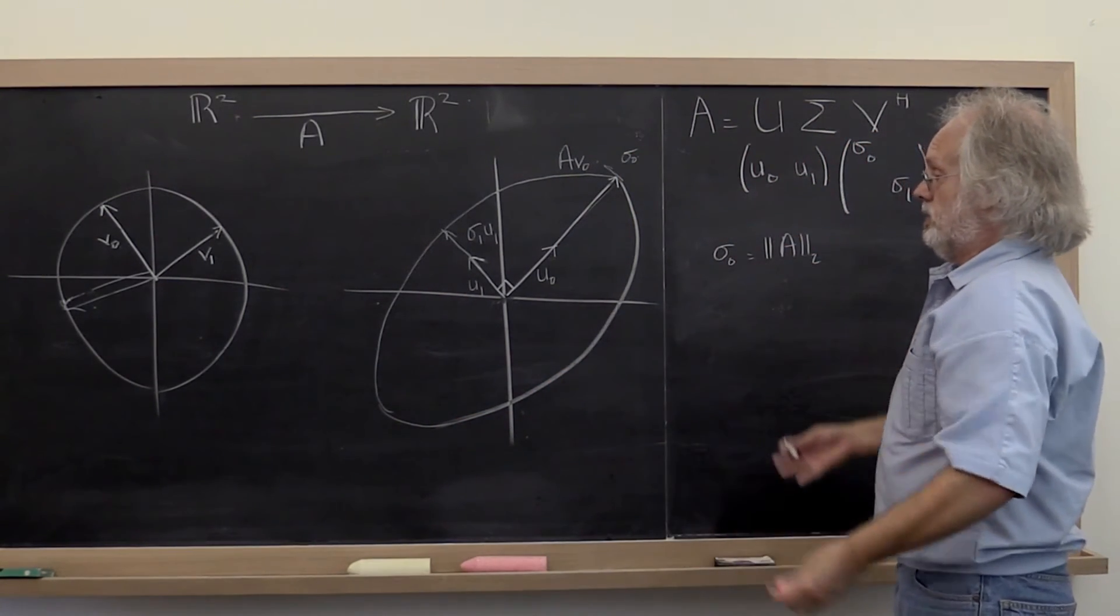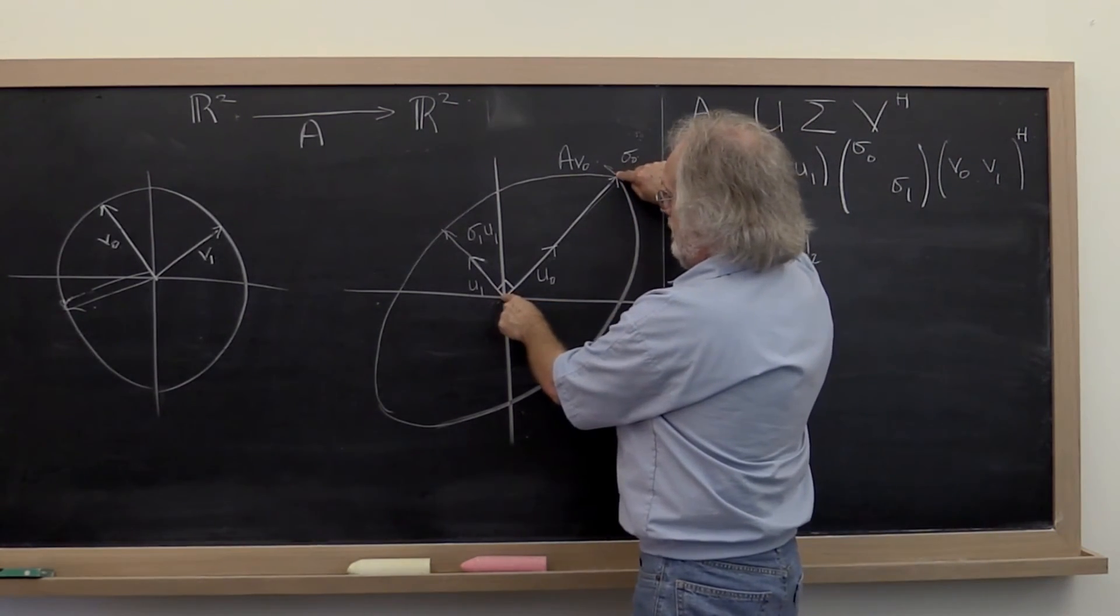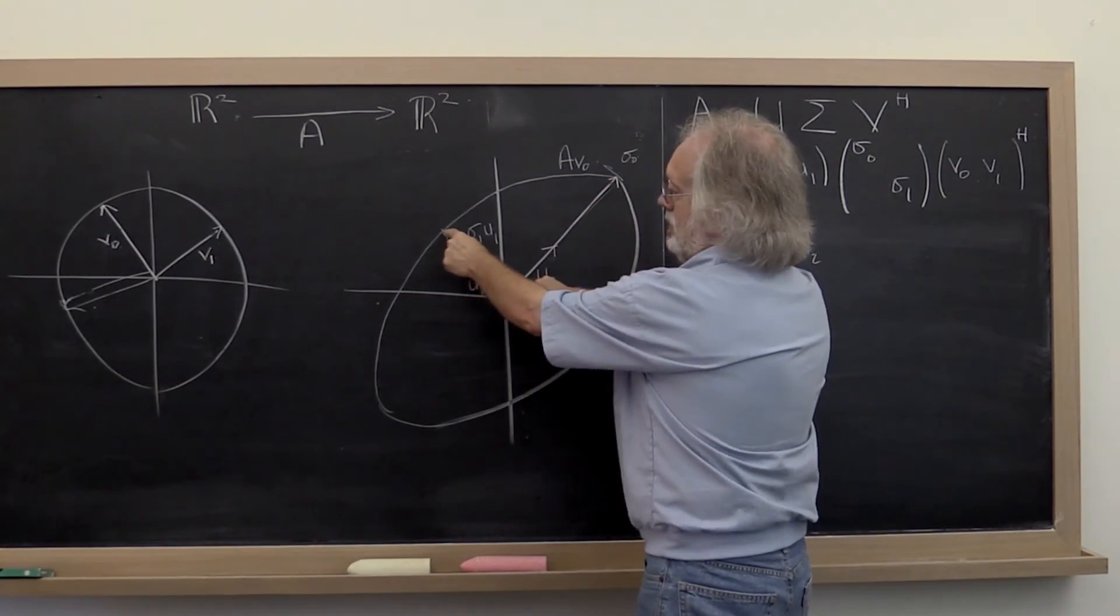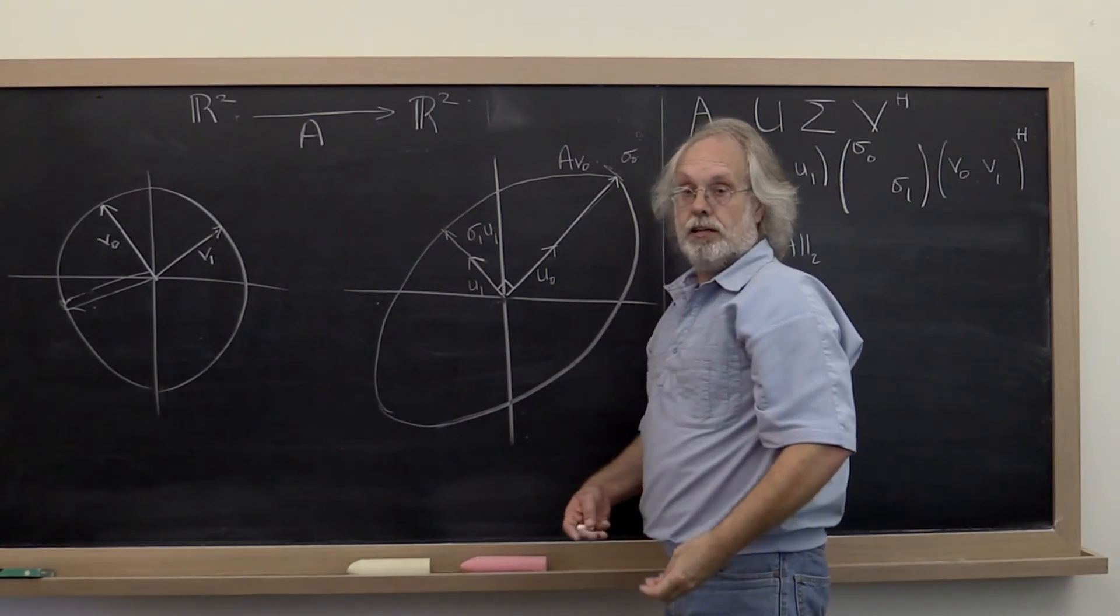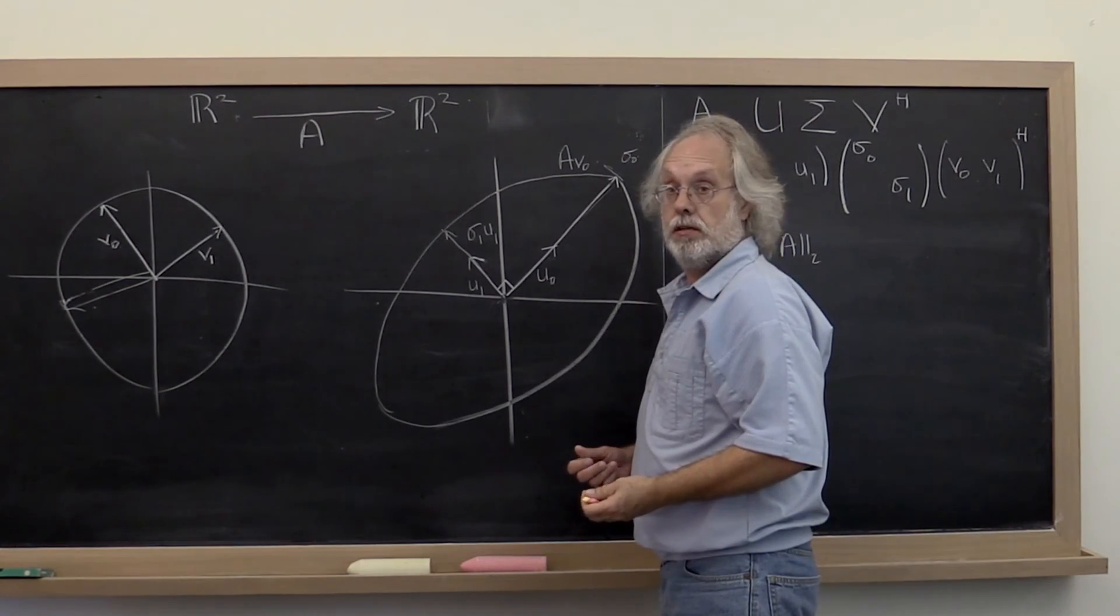Now we're going to see that it is actually the ratio between this distance and this distance that determines how close to singular the matrix is.